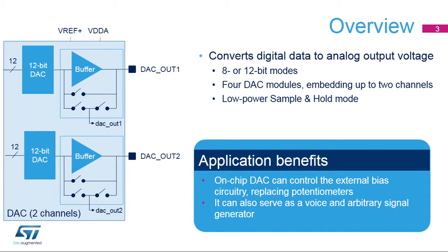The STM32G4 Digital to Analog Converter converts 8 or 12-bit digital data to an analog voltage. Each DAC module has two converters that can work synchronously or asynchronously. A low power sample and hold mode is also integrated. The DAC can interface with external potentiometers or bias circuitry, and can also create voice and arbitrary signals.